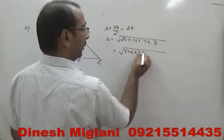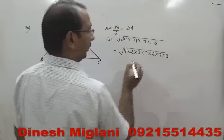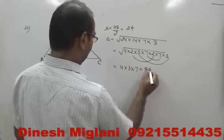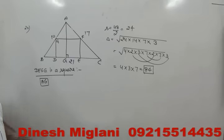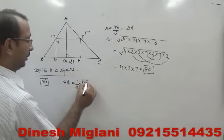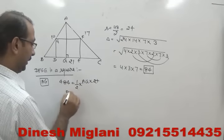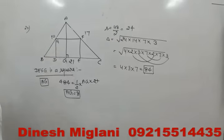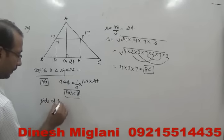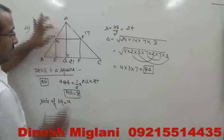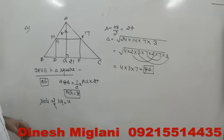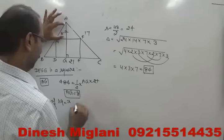Another hexagon problem: regular hexagon ABCDEF with midpoints P, Q, R of alternate sides. We need the ratio of area of triangle PQR to the area of the hexagon. One approach: divide the hexagon into small equilateral triangles by connecting all midpoints. Count the small triangles inside PQR: there are 9. Count total small triangles in the hexagon: there are 24. So the ratio is 9:24 = 3:8.